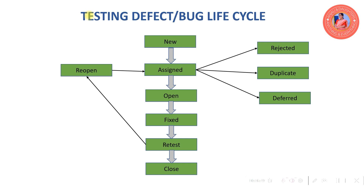When the defect is a valid defect, the developer is assigned it and the status becomes open. When the developer starts working on the defect, they give it the status open. Once the developer fixes the defect, the status changes to fixed. After fixed, the next step is retest, where the testing team retests the defect.